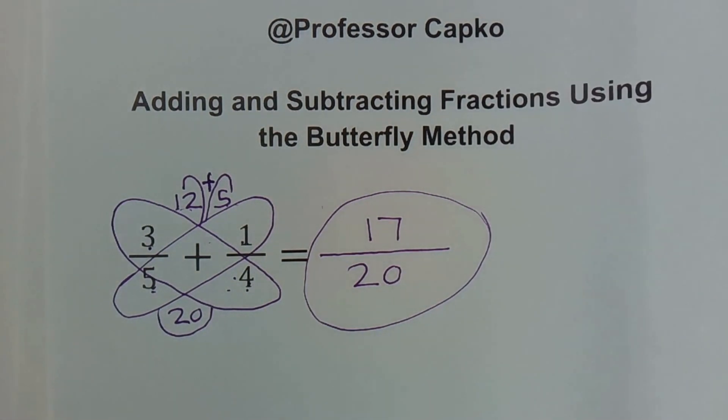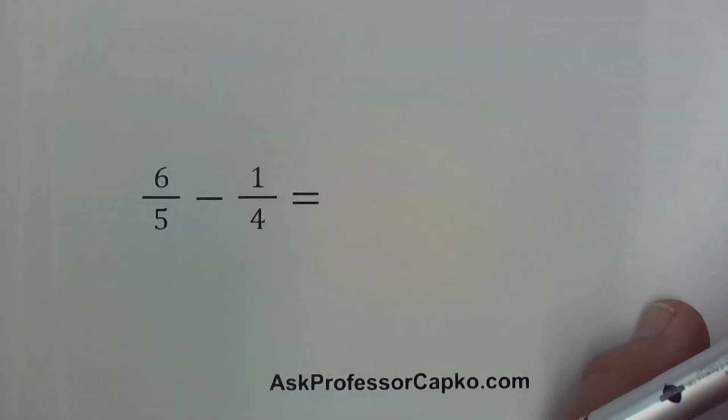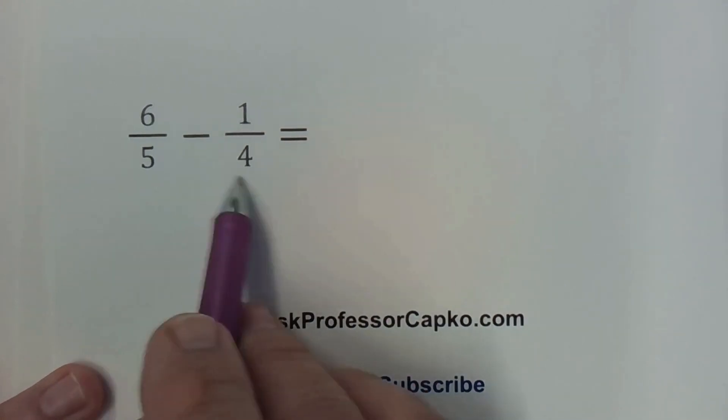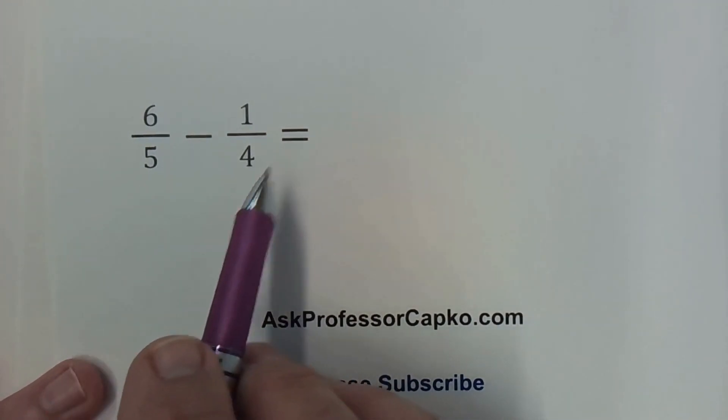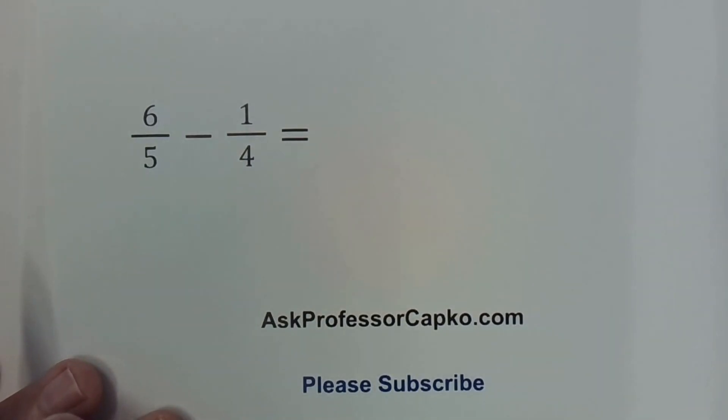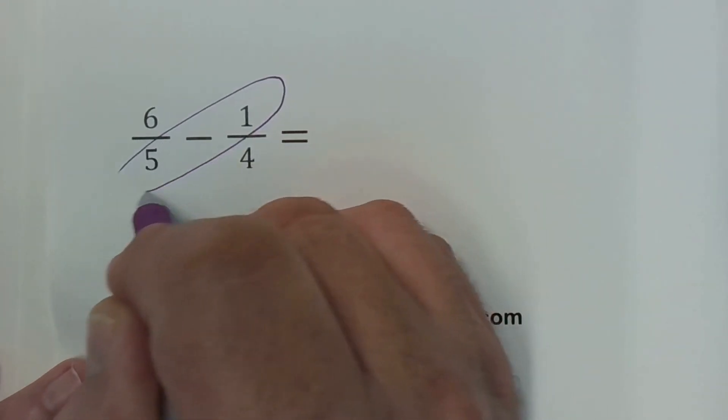Now let's do the subtracting of two fractions. Of course, once again I would need a common denominator. In this case we don't. I've got a 5 here and a 4 here. But that's okay, we can still use the butterfly method. I start the same way. I draw my wings of my butterfly.